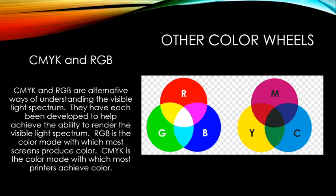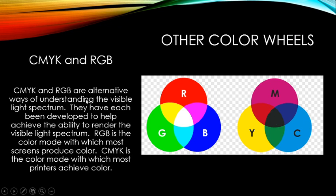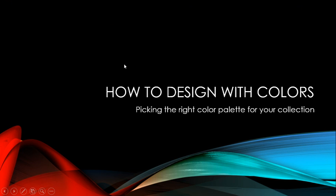CMYK is the color mode most printers use. If you're printing your work, use the CMYK color mode. Printers use cyan, magenta, yellow, and black (K) ink to produce all other colors. RGB stands for red, green, blue; CMYK stands for cyan, magenta, yellow, and black.